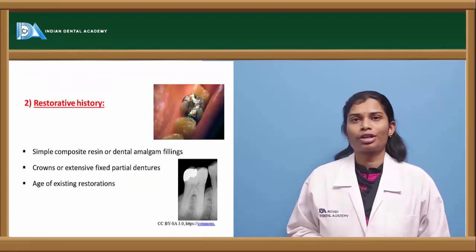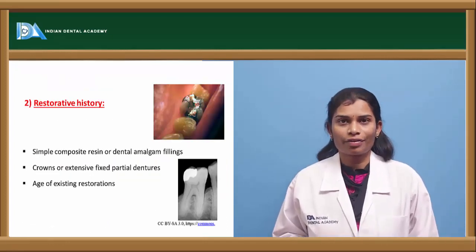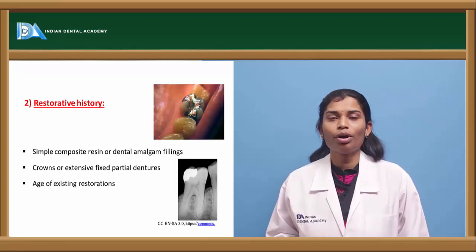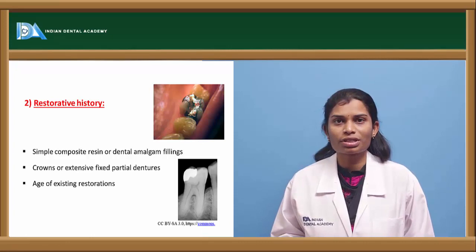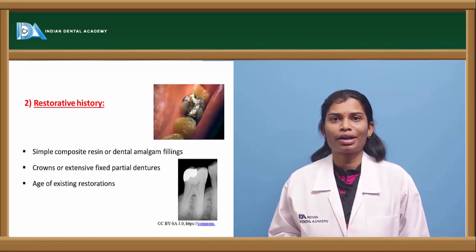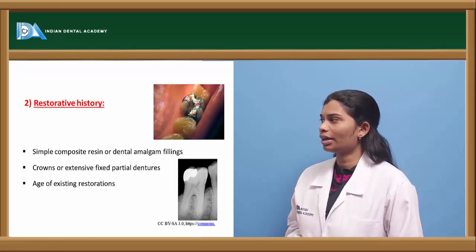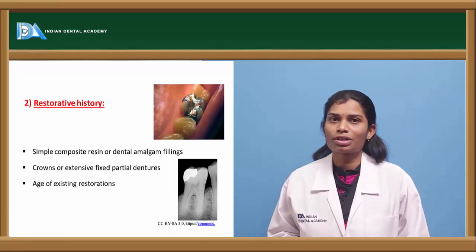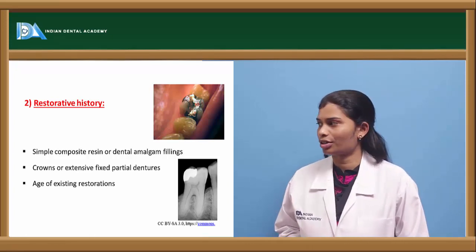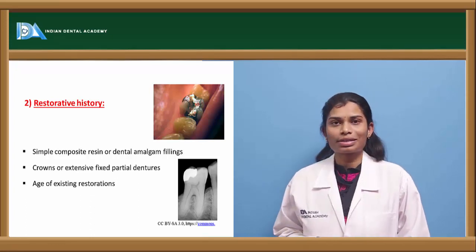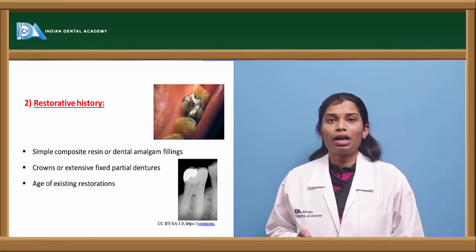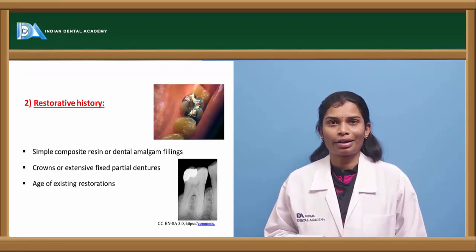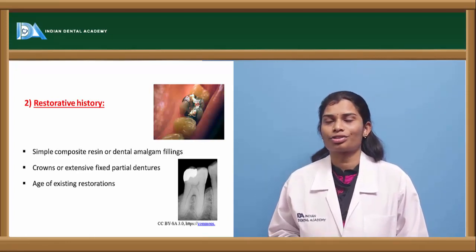Coming to restorative history — you have to carry out a thorough examination related to previous restorative procedures the patient has undergone, like any fillings or other corrective procedures. This also includes crowns and any permanent restorations. Consider the age of the restorations: when were they done, what material was used, and why were they done?